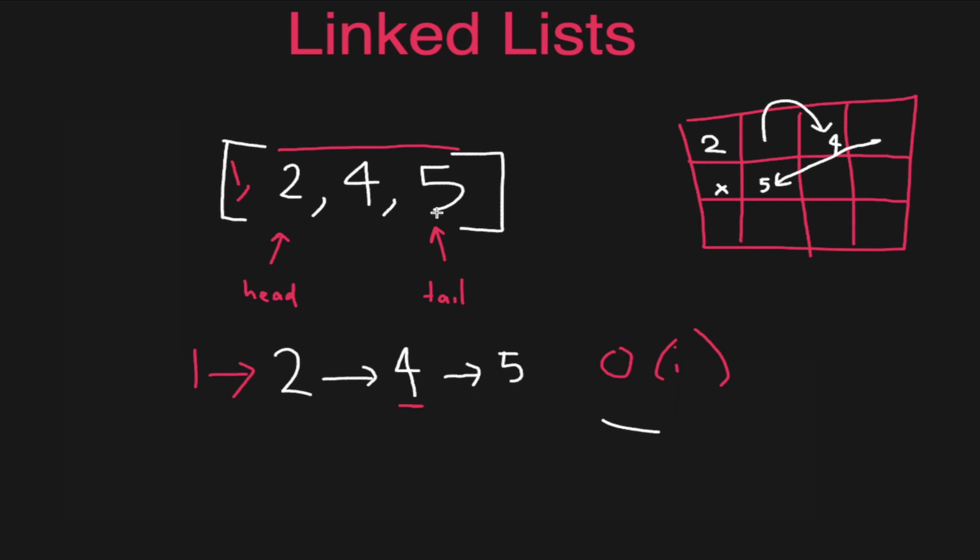In most cases, the only time complexity benefit a linked list has over an array is the ability to push to the start of the list or push near the start. So in every other case, an array would be better, unless there's some specific thing you're trying to do.